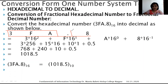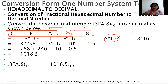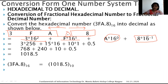From the decimal point, going towards the left we assign positive powers, and going towards the right we assign negative powers. Starting from A: assign 16⁰ to A, 16¹ to F, and 16² to 3 for the positive powers. For the digit 8 after the decimal point, assign 16⁻¹; if there were more digits they would get 16⁻², 16⁻³, and so on.